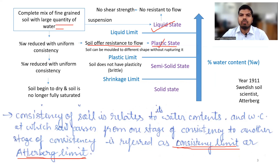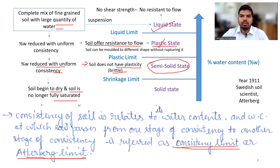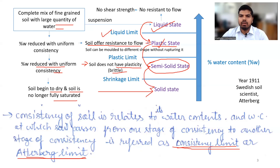In the plastic state, soil can be moulded into different shapes without rupturing. With further reduction in water content, soil loses plasticity, shows brittle nature, and is in the semi-solid state. With further reduction in water content, soil begins to dry and is no longer fully saturated, representing the solid state. The transition from liquid state to plastic state is called the liquid limit, from plastic state to semi-solid state is the plastic limit, and from semi-solid state to solid state is the shrinkage limit.